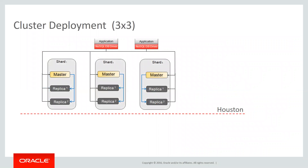In today's lab, we want to set up a data center — we call it the Houston data center. We want to set up a three-by-three NoSQL cluster: three shards, each having three copies of the data. There are three shards — shard one, shard two, shard three — and inside each shard there are three nodes: one is elected as a master node, and the others are replica nodes.